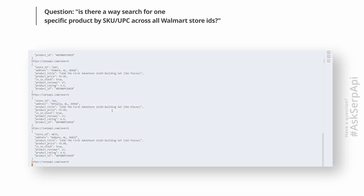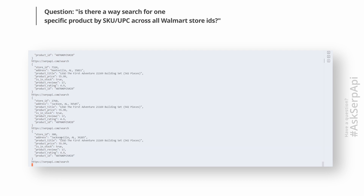And here's the example output. Note that if you don't need the data at the moment, you can run the script and leave it running. Then return to these searches using our search archive API, which lets you retrieve the HTML or the JSON of your search up to 31 days after the search has been completed.